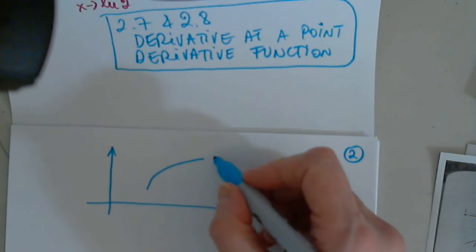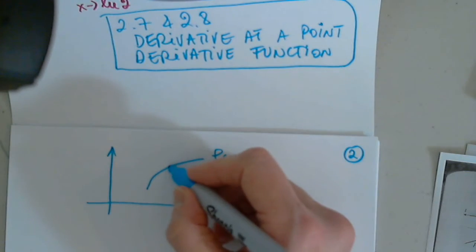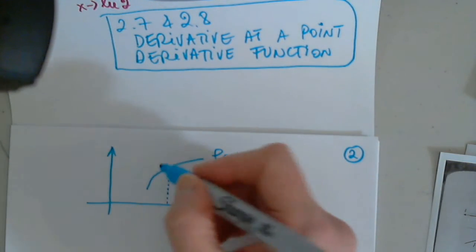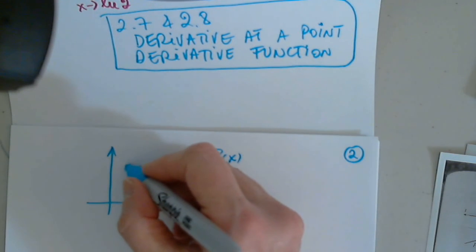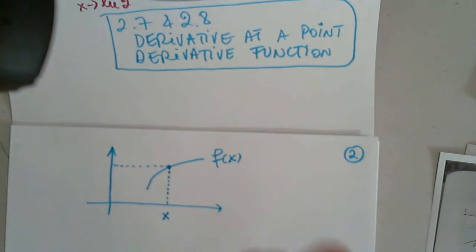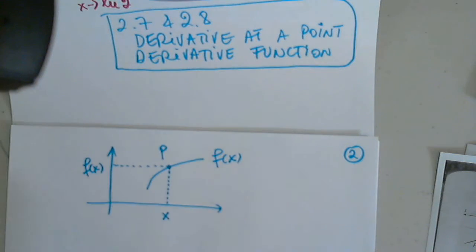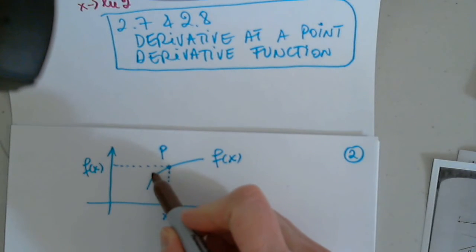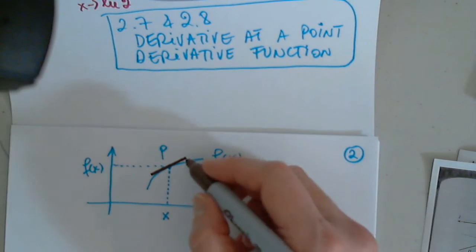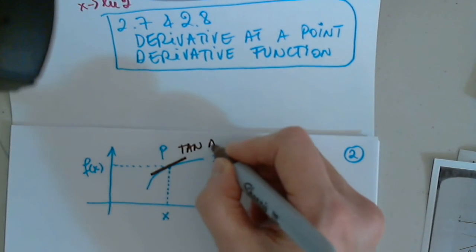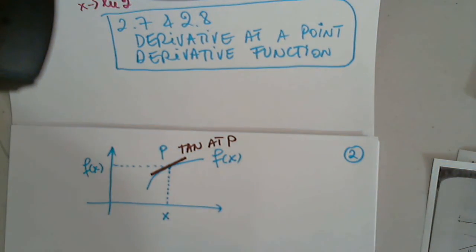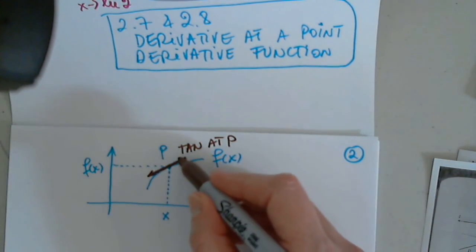First of all, let's go back to our function that we graphed so many times before. And here it is. So here's our function, f of x. I have a point here. So this is x, this is point P, and this is point f of x. This is the y value of that point, f of x of course.